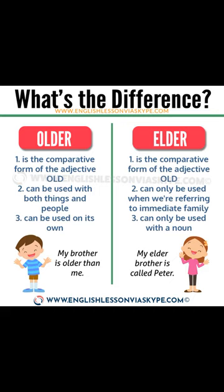The adjective 'old' has a base form, a comparative form, and a superlative form: old, older, and oldest. Examples of the three forms: the old dog, the older dog, the oldest dog. These can all be used when talking about things and also people.